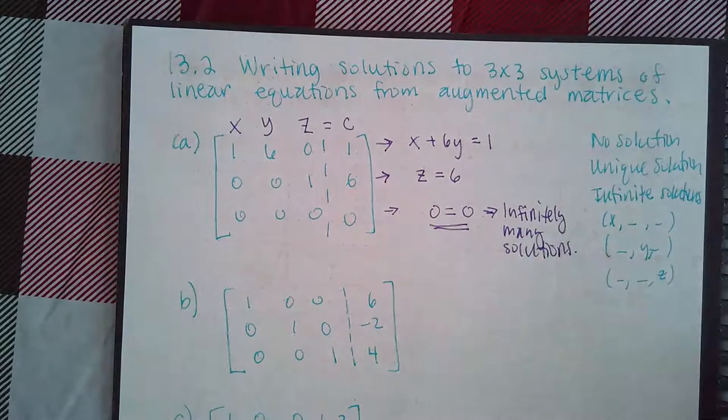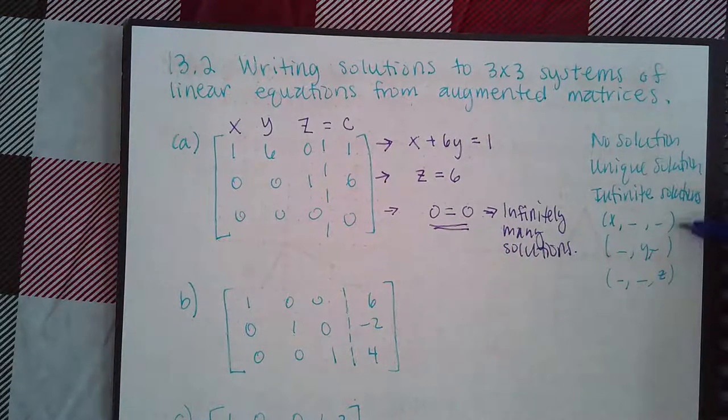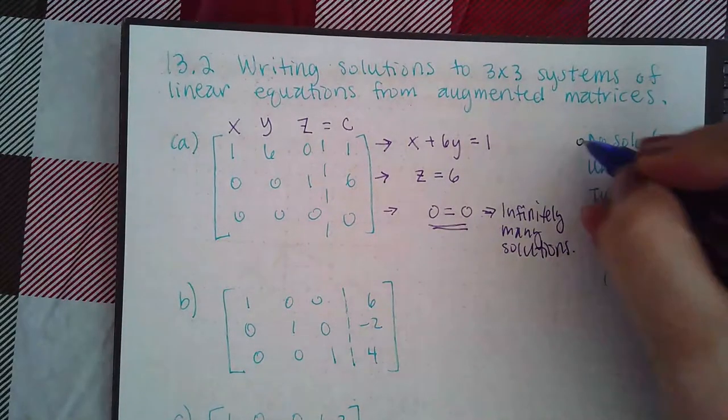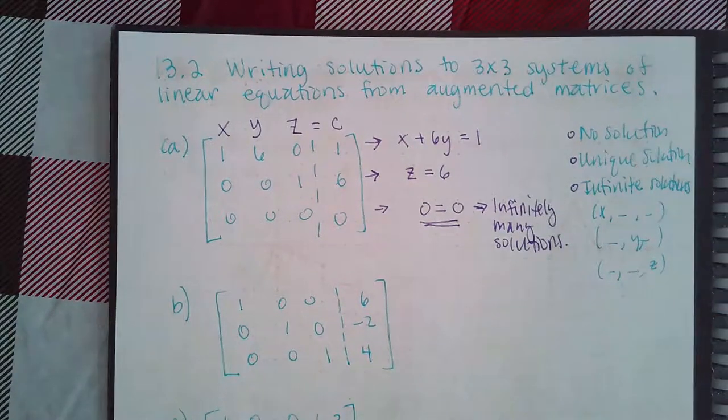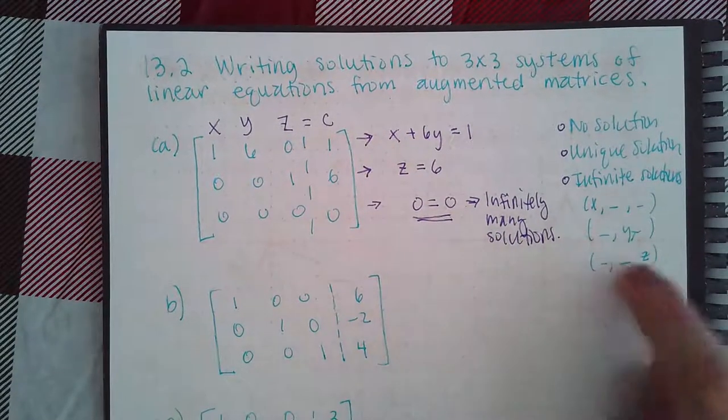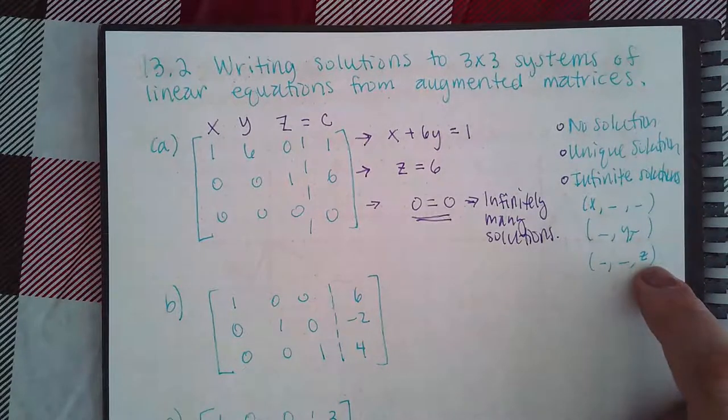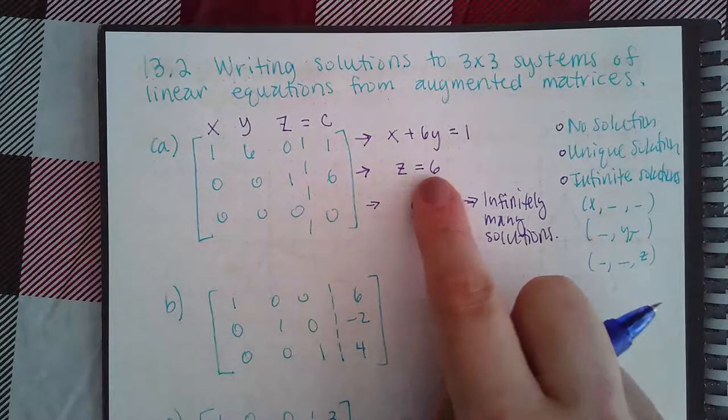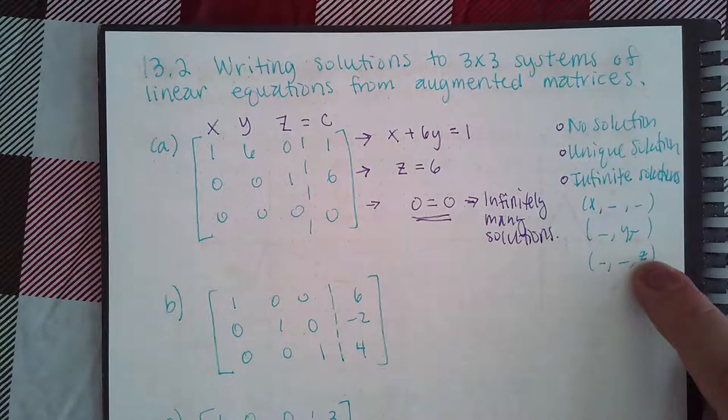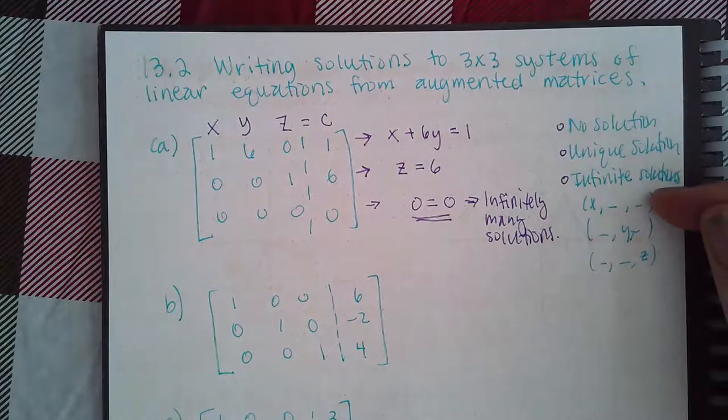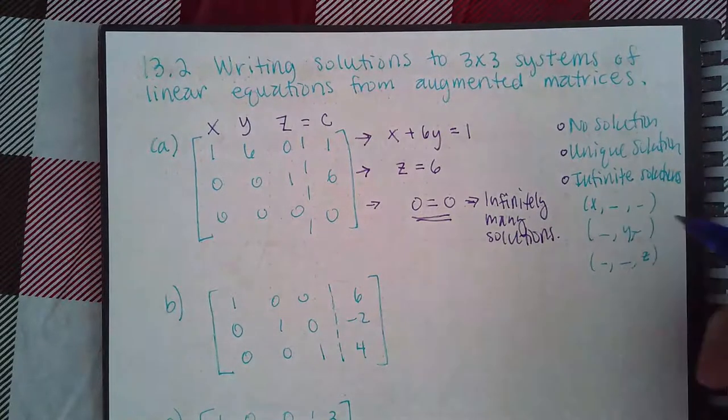It's a matter of selecting one of these three. You either have this as an answer, this as an answer, or this as an answer. Since I ended up with this third one, I have to select one of these. Now because I do have a value for z, I am not going to select this option.